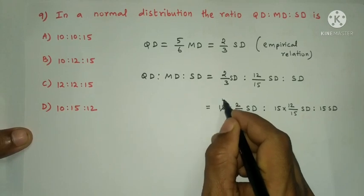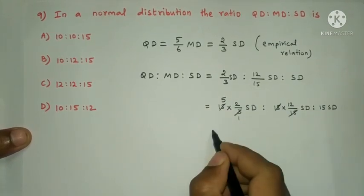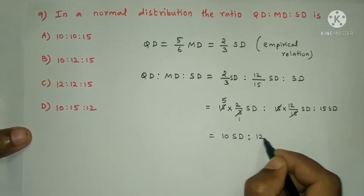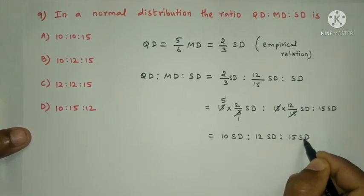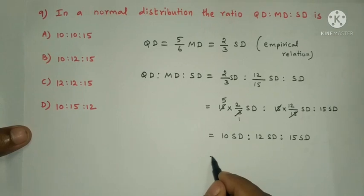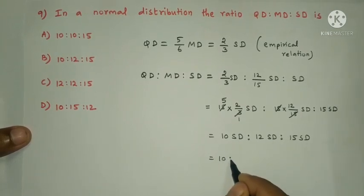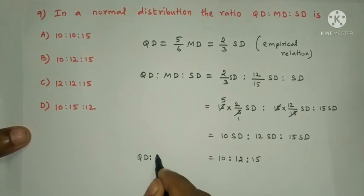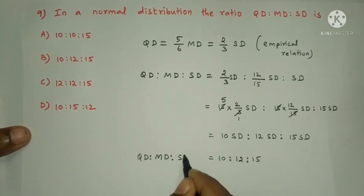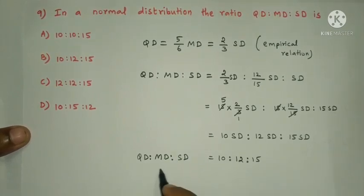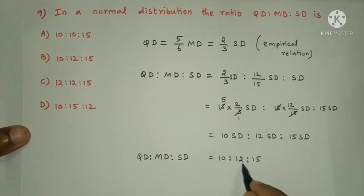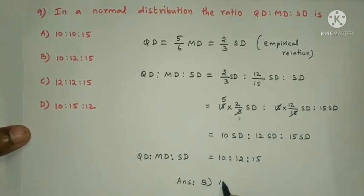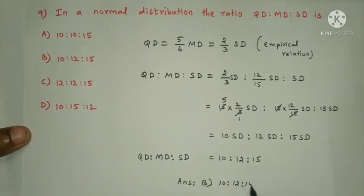Working out the ratio: 5×3=15 and 5×2=10 for quartile deviation giving 10; mean deviation giving 12; standard deviation giving 15. So the ratio of quartile deviation to mean deviation to standard deviation is 10:12:15. The answer is option B: 10:12:15.